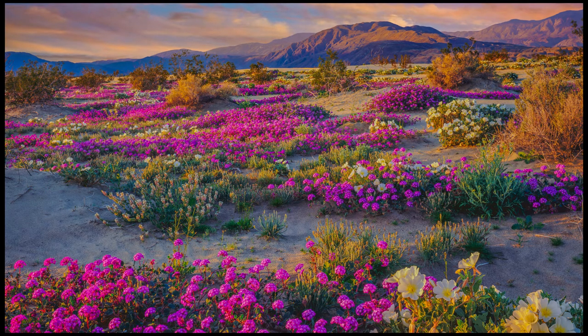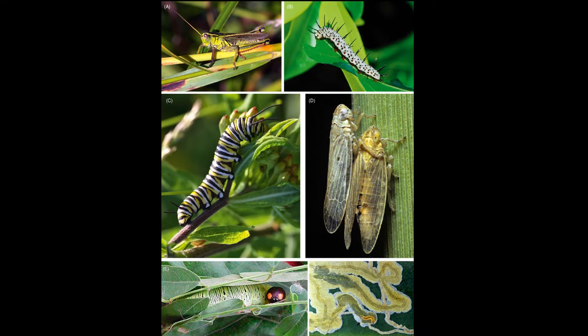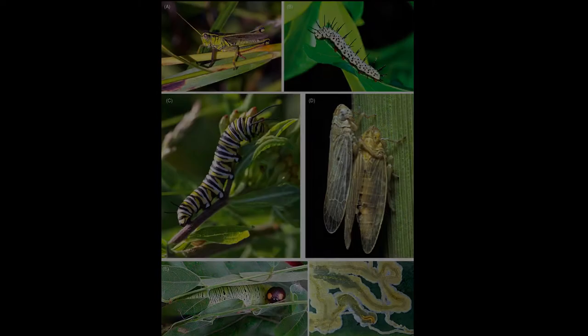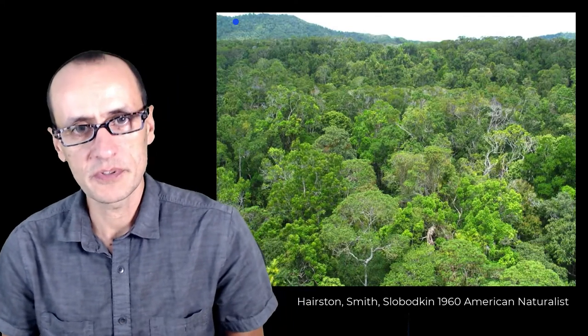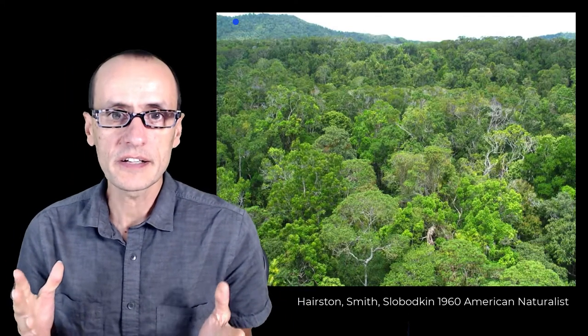And this is despite the fact that, as we've already learned in this class, insects have a variety of ways of chomping on that plant tissue, either as leaf miners or stem borers or gallers. They've evolved all sorts of ways to take advantage of those plants. So why is it that, for the most part, the world is green? In a seminal paper in 1960, Hairston, Smith, and Slobodkin tried to propose some ideas as to why this was actually the case.